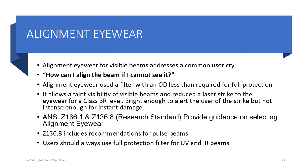Alignment eyewear is only for visible beams and addresses the question: how can I align my system if I can't see the beam with my eyewear on? Alignment eyewear is designed to have an optical density less than what would give full protection. The idea is you see the beam a little fainter but retain visibility — if the beam hits your lens, what passes through is bright enough to trigger your diversion response to turn away, but not strong enough for instant damage. ANSI Z136.1 and Z136.8 provide considerable guidance on selecting alignment eyewear, and Z136 is the only one with recommendations for pulsed systems. For UV and infrared systems, you should not be wearing alignment eyewear.